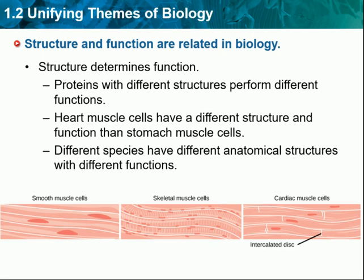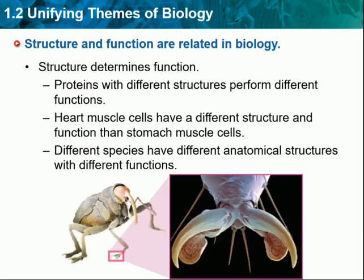A brain cell cannot take the place of a red blood cell. Structure and function are also related at the level of the organism. For example, your foot structure allows you to walk easily on rough, fairly even surfaces, but walking on ice is more difficult and walking up a wall is impossible. The beetle shown on the screen here is different — its tarsus, or feet, have sharp prongs that can grip smooth or vertical surfaces, as well as soft pads for walking on rough surfaces. The beetle's tarsus has a different structure and function than your foot, but both are specialized for walking.